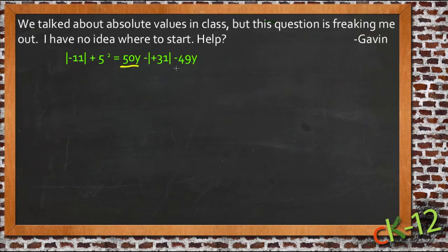For instance, we have 50y here minus 49y. And we know that these two things are like terms, so as long as we keep the value to the left of them, we can combine those like terms.